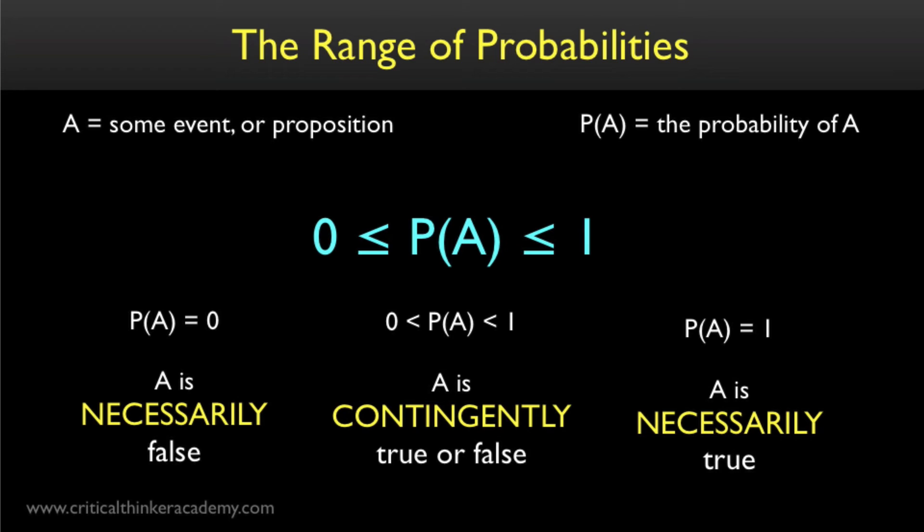Now, if a proposition or an event has probability that it's not zero or one, but lies between zero and one, that means it's possible that the proposition is true, or that the event will occur. When this is the case, we commonly say that the proposition is a contingent proposition, rather than a necessary proposition. Similarly, we'd say that it's a contingent event, rather than a necessary event.